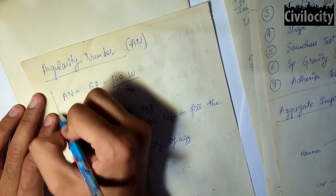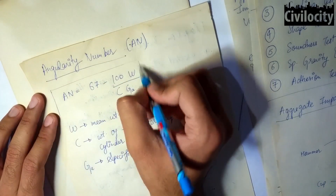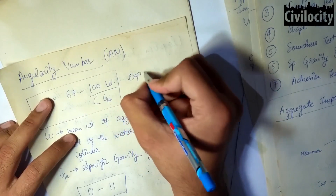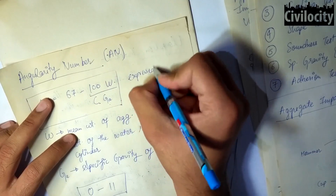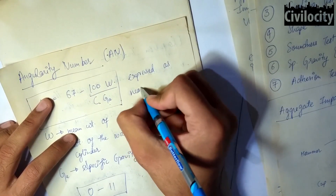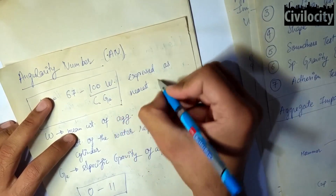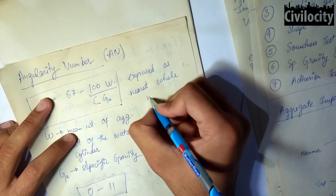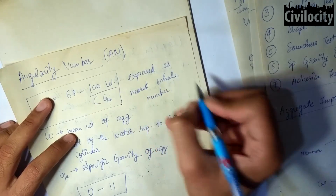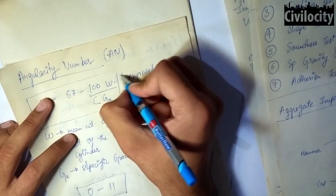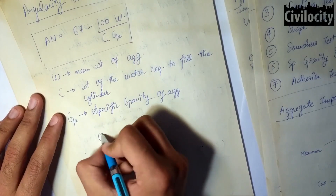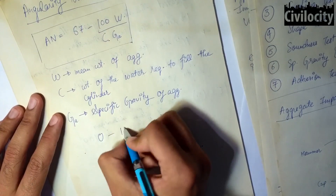Ga is the specific gravity of the aggregates. Higher the angularity number, more angular the aggregate. The angularity number is always expressed as the nearest whole number, and the angularity number for construction lies between 0 to 11.